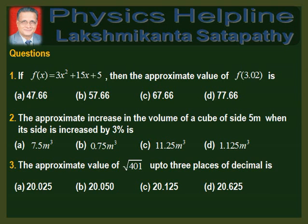Question 3: The approximate value of root over 401 up to 3 places of decimal. The options are 20.025, 20.050, 20.125, and 20.625.